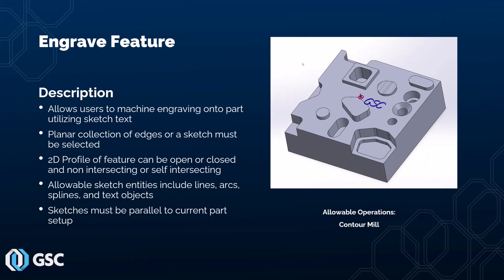The last 2.5-axis feature we'll look at is the engrave feature. The engrave feature allows users to machine engraving onto a part, typically utilizing some sort of sketch text. A planar collection of edges or a sketch must be selected. The 2D profile can be open or closed and non-intersecting or self-intersecting. The allowable sketch entities include lines, arcs, splines, and text objects. Sketches must be parallel to the current part setup. The allowable operations are contour mill — this is how you create engraving on a flat surface.